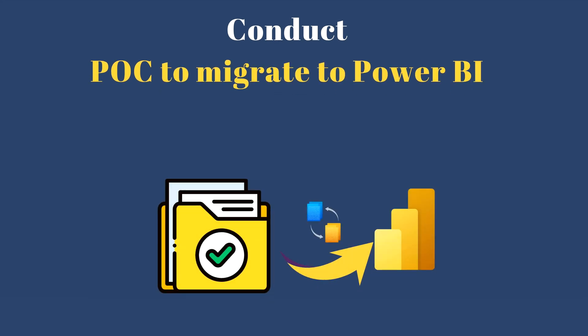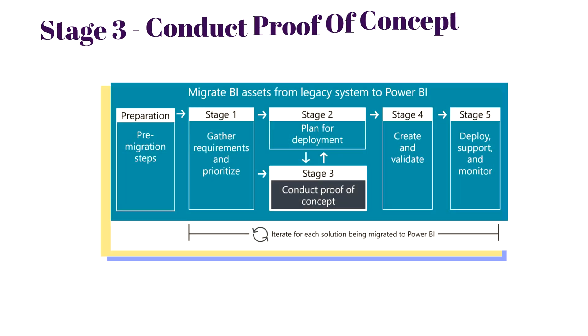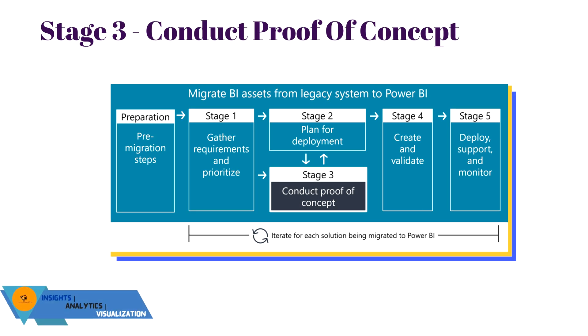In this video we are going to discuss Stage 3, which is concerned with conducting a proof of concept (POC) to migrate risk and address unknowns as early as possible when migrating to Power BI. This is our diagram that we are working on, and you can clearly see that Stage 2 and Stage 3 can work in parallel.